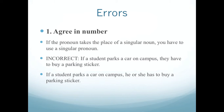Sometimes people make several mistakes with pronouns. There are three main rules. The first rule is agree in number. If the pronoun takes the place of a singular noun, you have to use a singular pronoun. For example: 'If a student parks a car on campus, they have to buy a parking ticket.' 'A student' is a singular noun but 'they' is a plural pronoun, so we need 'he or she.' The correct sentence is: 'If a student parks a car on campus, he or she has to buy a parking ticket.'